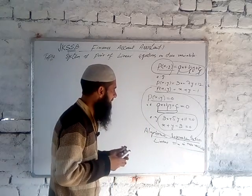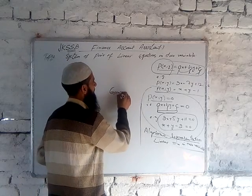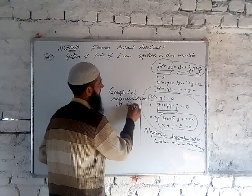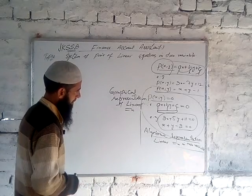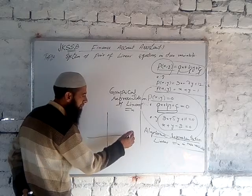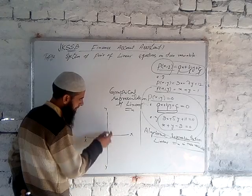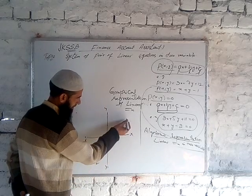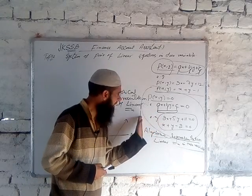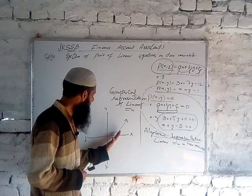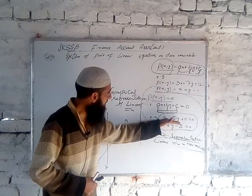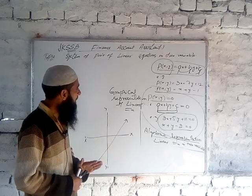The second representation is the geometric or graphical representation. The geometric representation of a linear equation in two variables is simply a straight line in a plane. Taking the plane with x-axis and y-axis, if we have a linear equation, corresponding to that linear equation we get a particular line in a plane, and vice versa.